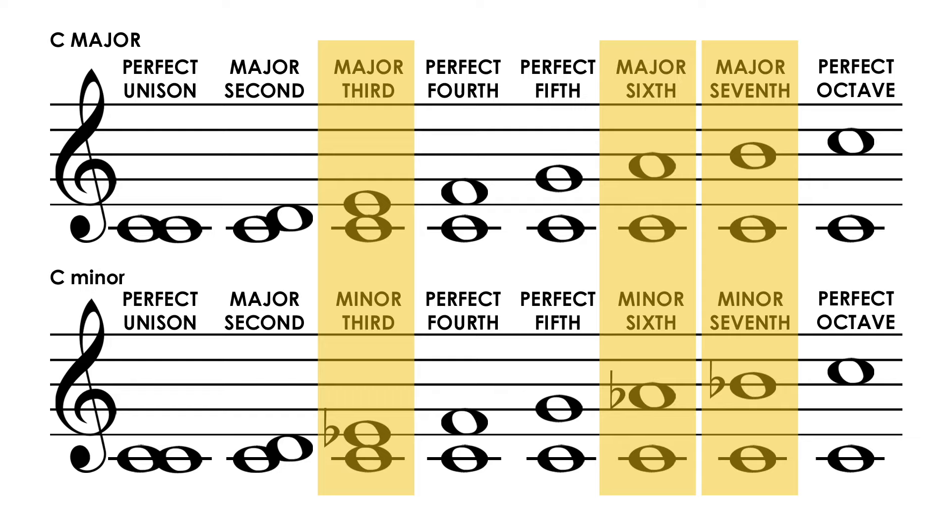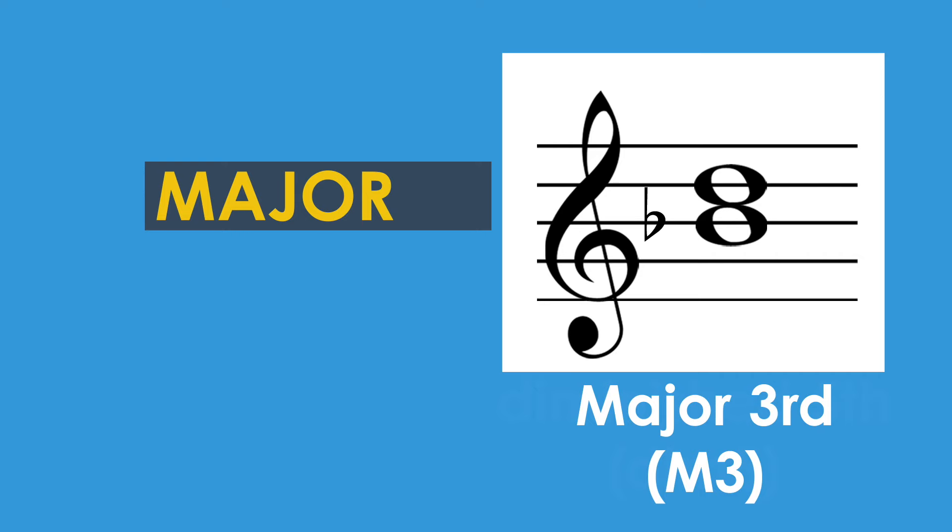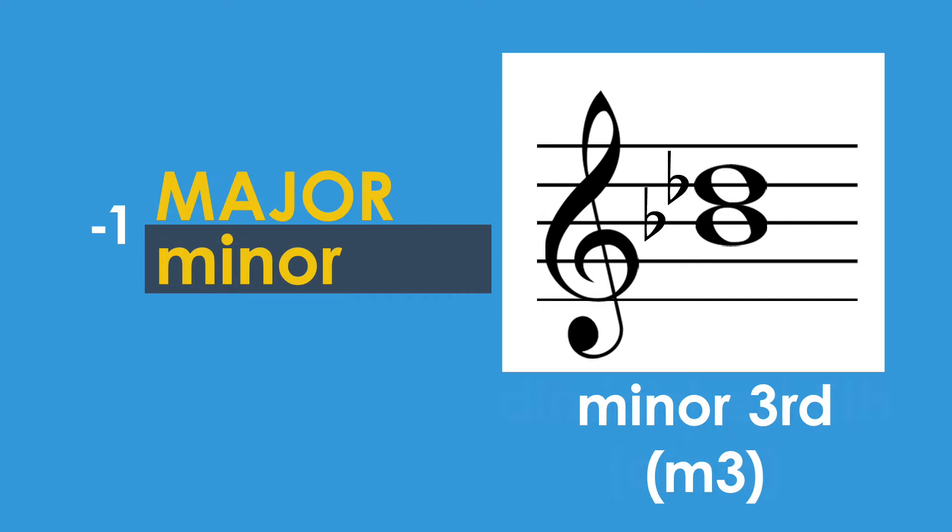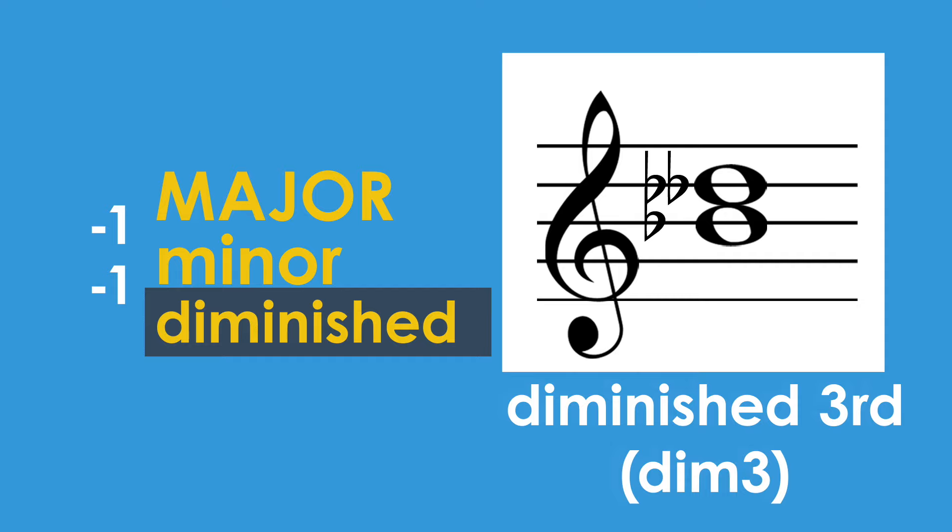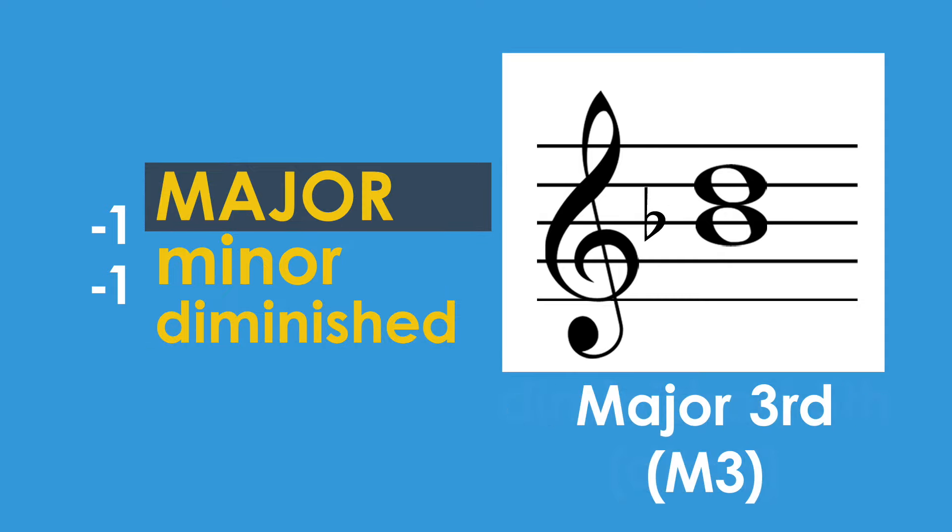So what about augmented and diminished intervals? Well, remember that minor intervals are one half step smaller than major intervals? And if we make a minor interval one half step smaller, it becomes diminished. If we go back to the original major interval and make it one half step larger, it becomes augmented.